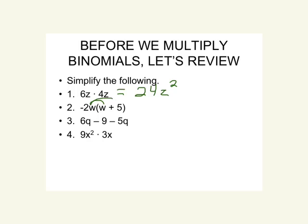Another quick review warm-up problem: negative 2w times (w + 5). Here we simplify by distributing. Negative 2w times w would be negative 2w squared, and negative 2w times 5 would be negative 10w.